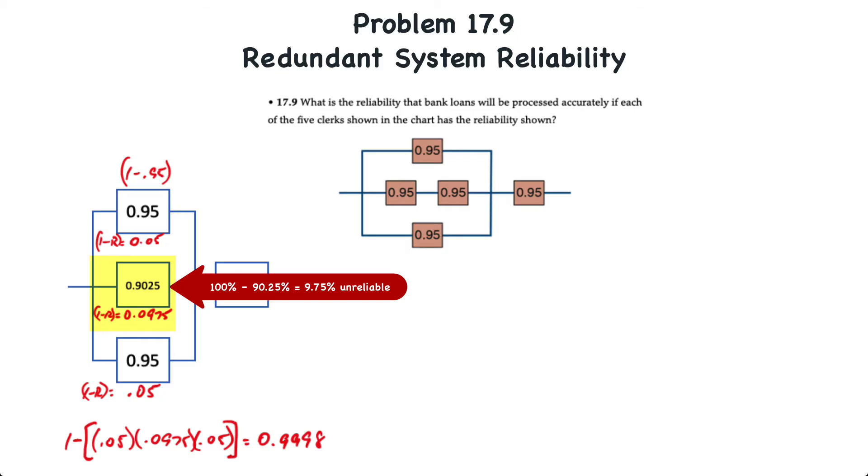The combination of the two clerks in series has a reliability of 0.9025 or unreliability of 0.0975, or 9.75%. So, what we do is we take and multiply each of those and then subtract from one.